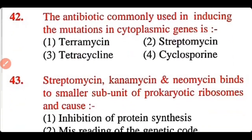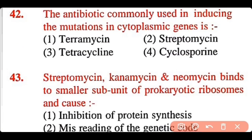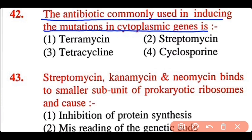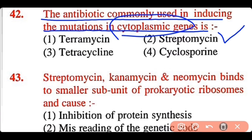Question 42: The antibiotic commonly used in inducing mutation in cytoplasmic genes is: tetramycin, streptomycin, tetracycline, or cyclosporine. The correct answer is option 2. Streptomycin is the antibiotic commonly used to induce mutation in cytoplasmic genes.